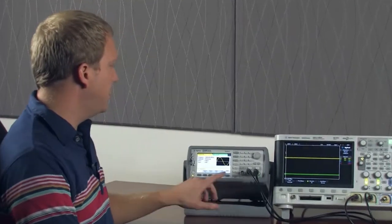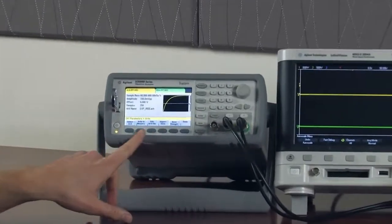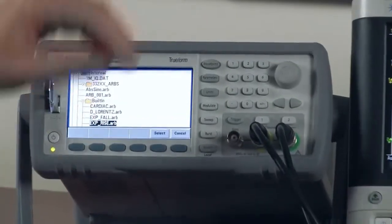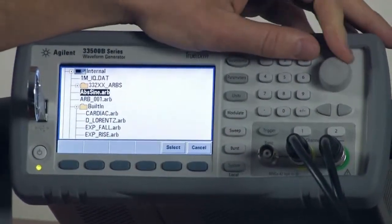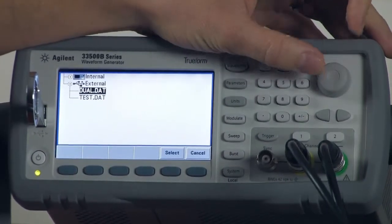Now if you go to the instrument and you go to ARB, ARBS, select ARB, and you want to go up to external because I saved it here on a thumb drive. I have a file called dual .dat.